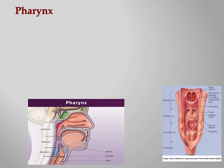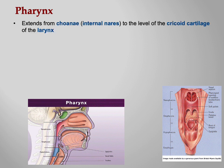Let's get into some anatomical detail. First, the pharynx. It extends from the choanae — the internal nares — to the level of the cricoid cartilage of the larynx. Looking at the illustration on the left, you have the nasopharynx, the oropharynx, and the laryngopharynx: three different regions of the throat.